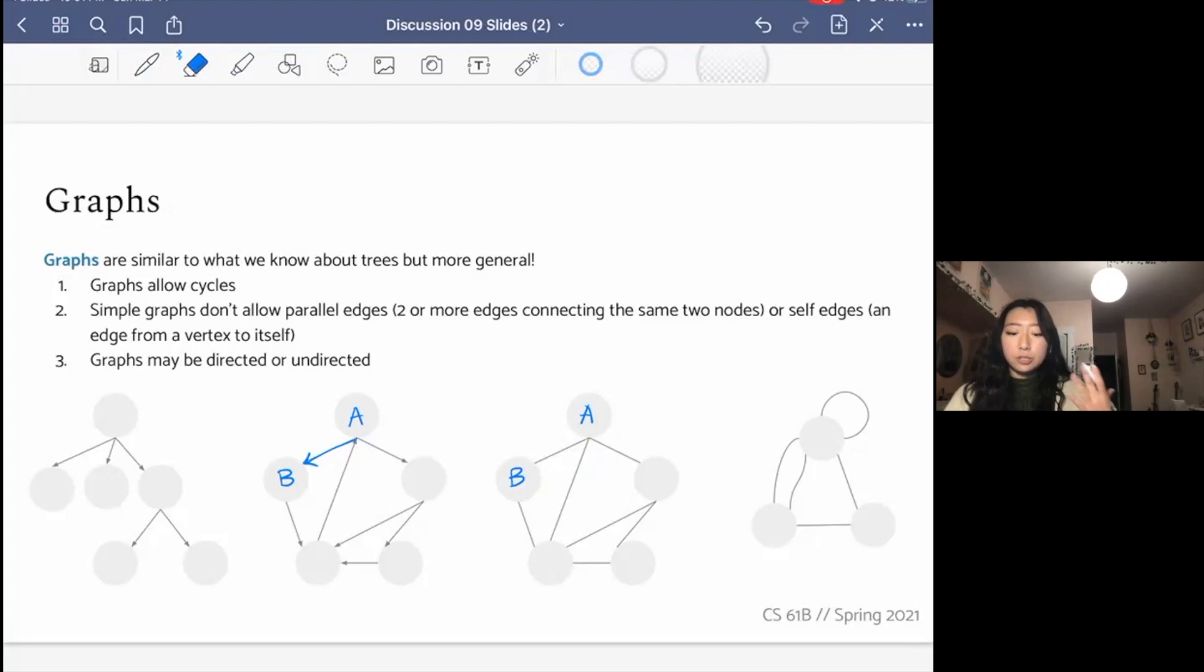Just a reminder that trees technically are a type of graph. For example, this tree is a valid graph, but not all graphs are trees. Lastly, this graph is not a simple graph, which means it's not in scope for this class. In our class, we'll only be talking about graphs that don't have parallel edges and don't have self edges.